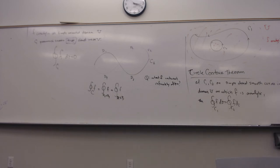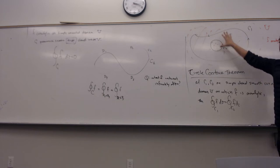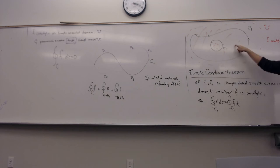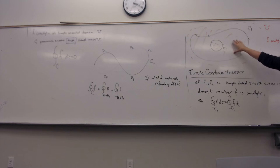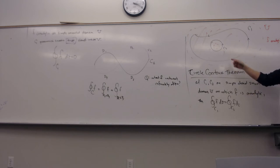The circle contour theorem says: if C1 and C2 are simple closed smooth curves in a domain U on which F is analytic, then the integral around C1 of F equals the integral of F around C2. We can replace one simple closed curve with another. However, you need both curves to sit inside the same set. If there's a deleted point outside, it would still be okay — the issue is an asymptote, not deletion of the point.